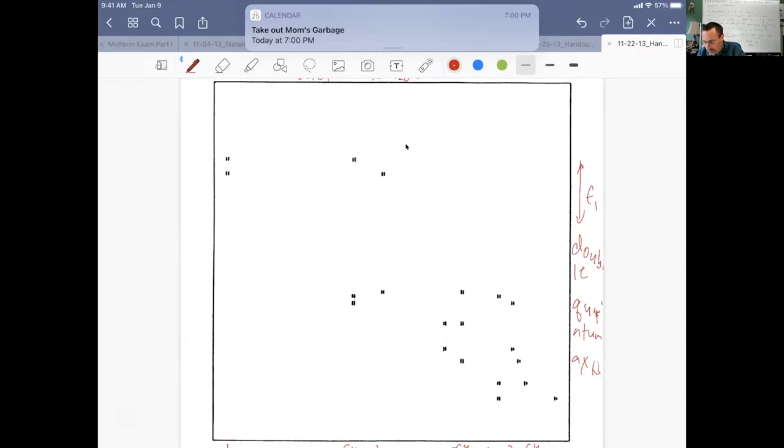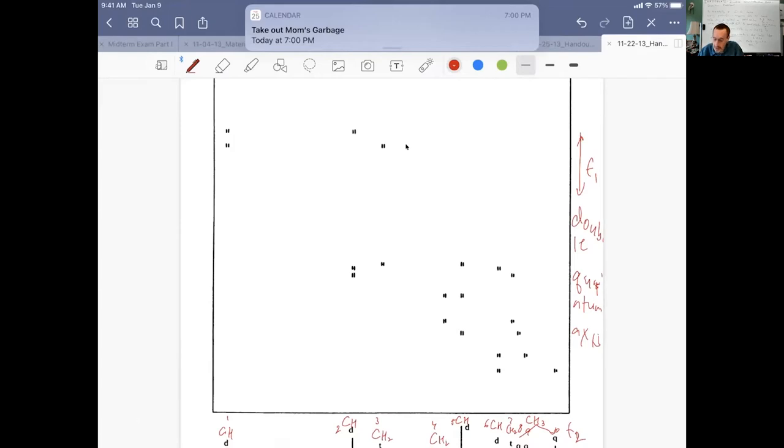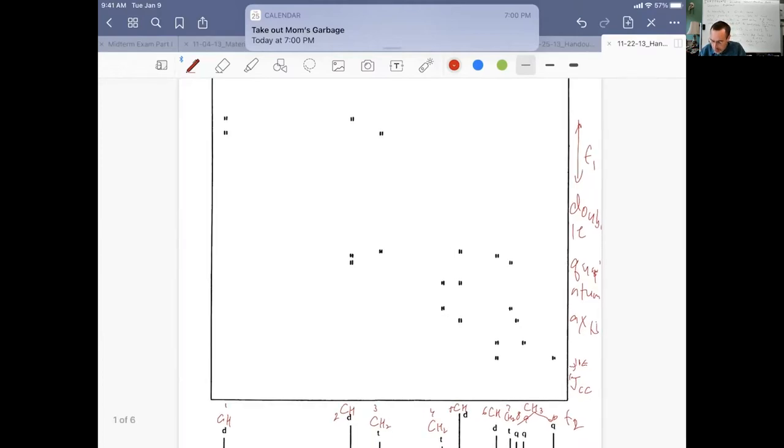Here we are with our inadequate spectrum. What I want you to first see is along the double quantum axis, we get these pairs of little lines. These pairs are separated in the carbon dimension, and these pairs are actually separated by J_CC, the carbon-carbon coupling. Carbon-carbon coupling constants are about 20 hertz if I remember correctly.